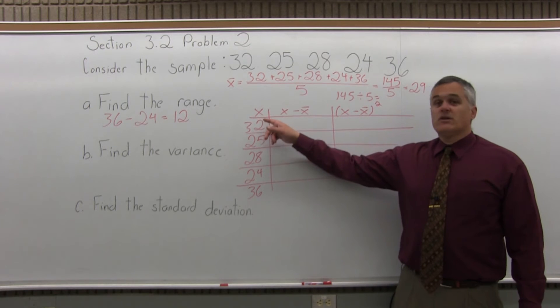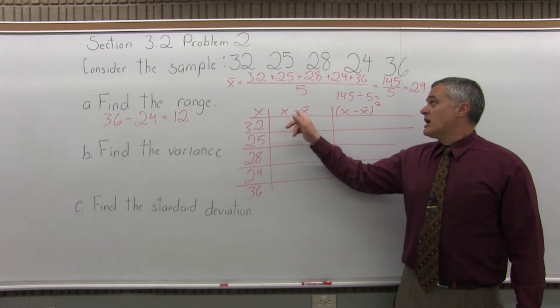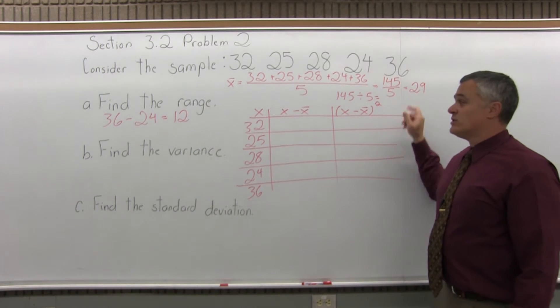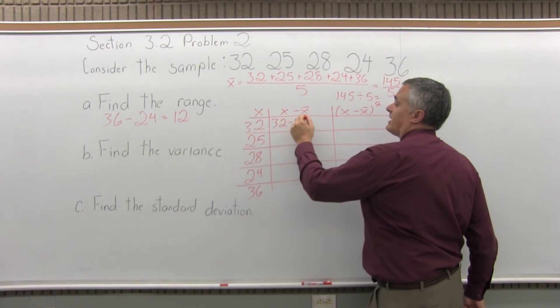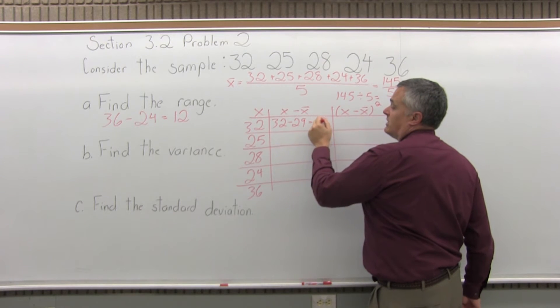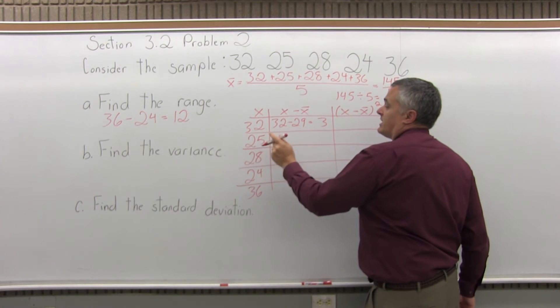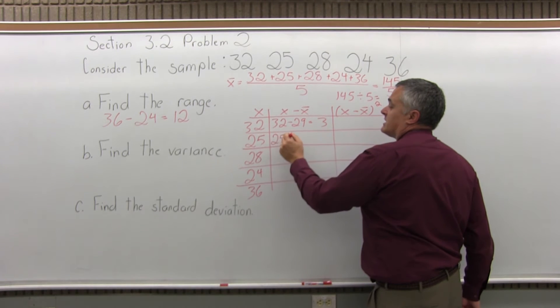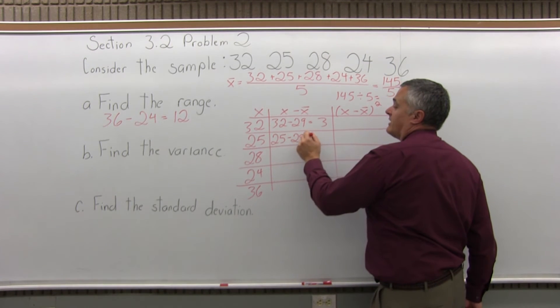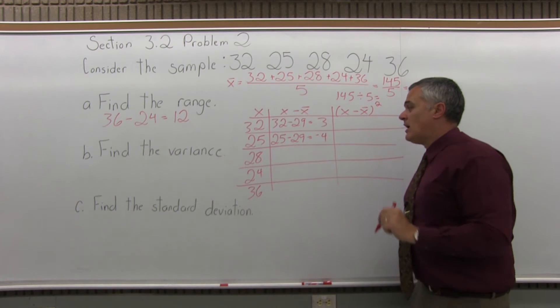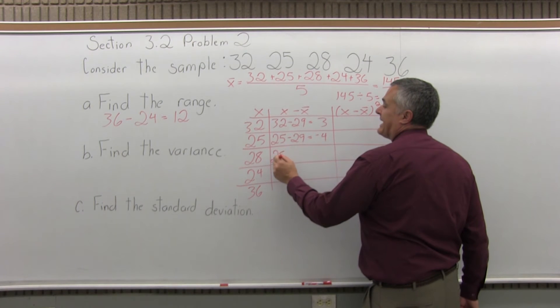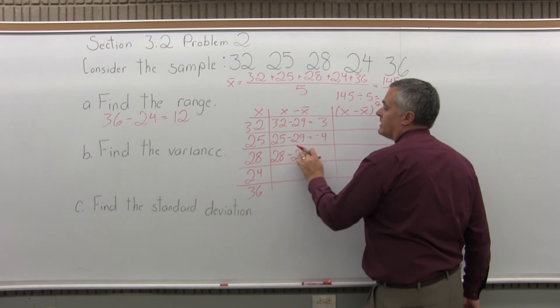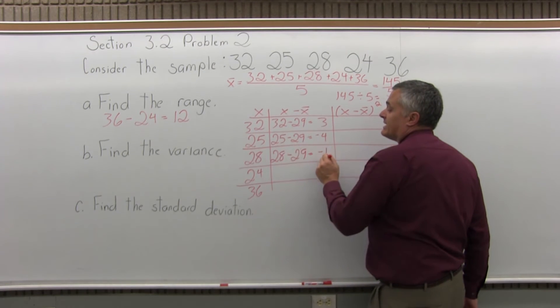In every row, you're going to take the value of X that you have for that row and subtract off the X bar, which for this problem is 29. On the top row, when X is 32, X minus X bar is 32 minus 29. And if you do the subtraction, you get 3, positive 3. The next row down, X is 25. So, X minus X bar is 25 minus 29. That would be negative 4. The middle row, X is 28. So, X minus X bar would be 28 minus 25. Oh, not 25, 29. 28 minus 29 is negative 1.